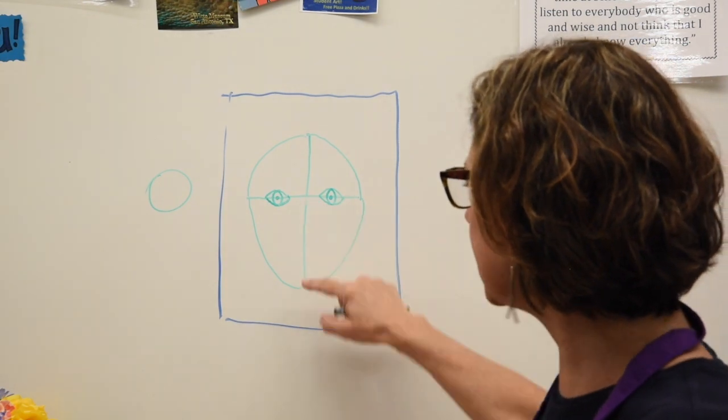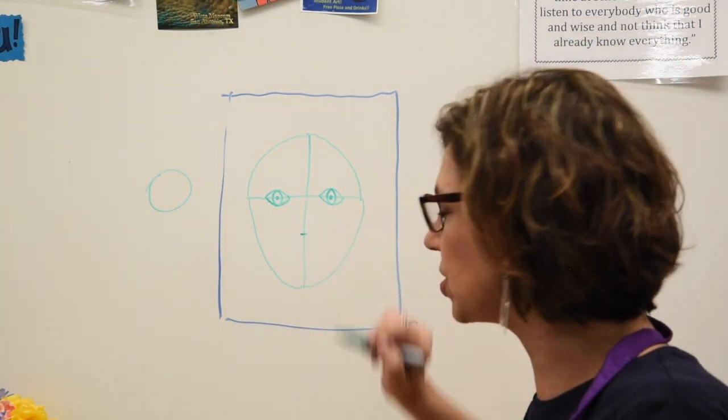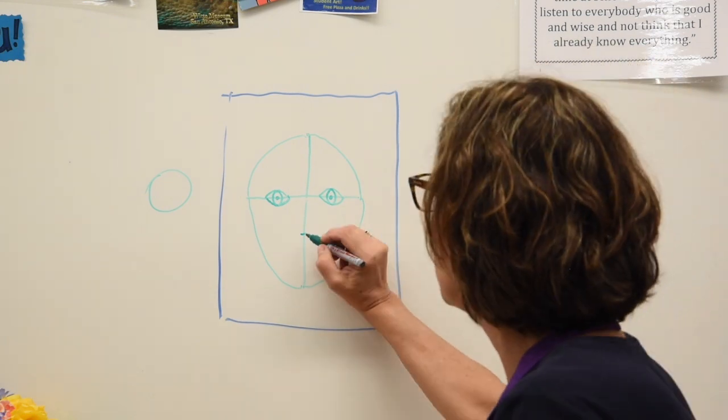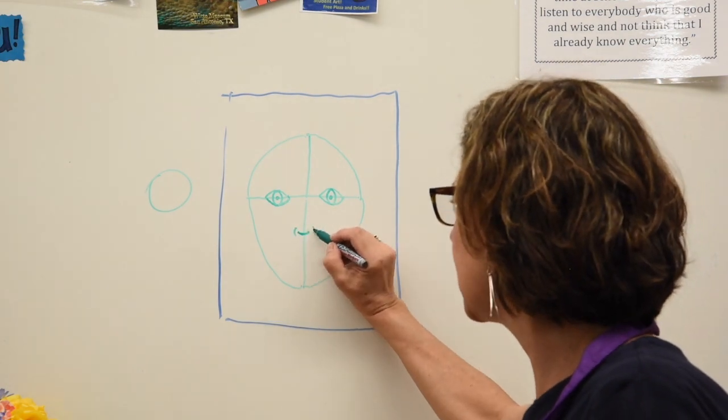Now between the eyes and the chin we have the nose. I would make a little line to start yourself. Remember the nose is a curve up like a little smile face with a parenthesis on each side.